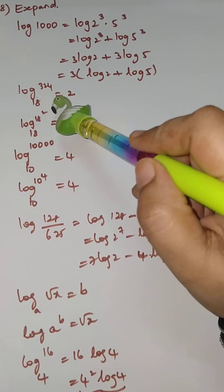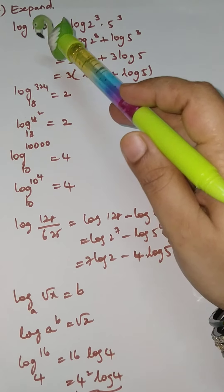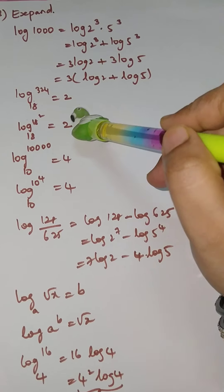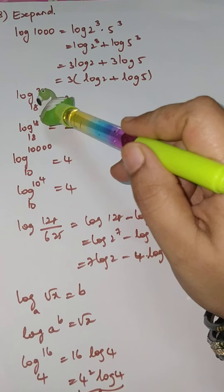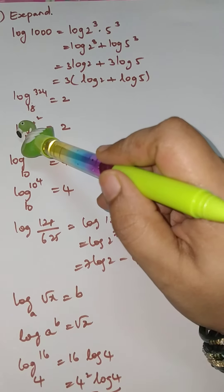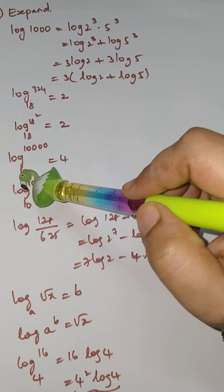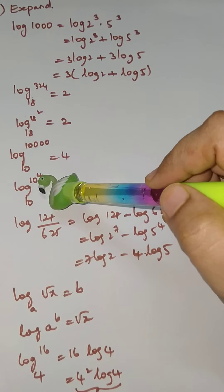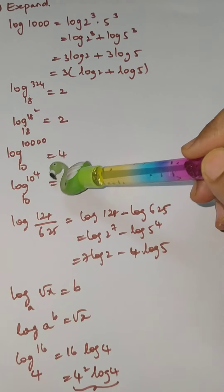Next, prove log₁₈(18²) = 2: since 18² = 18², log₁₈(18²) = 2·log₁₈(18) = 2×1 = 2. Also, log(10000) = log(10⁴) = 4·log₁₀(10) = 4.